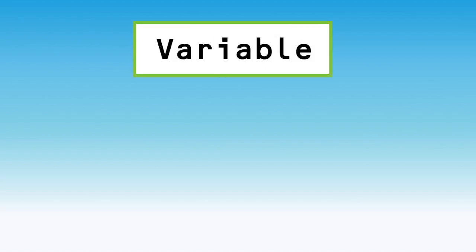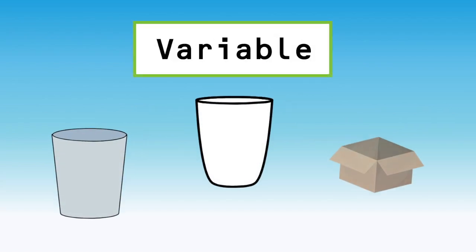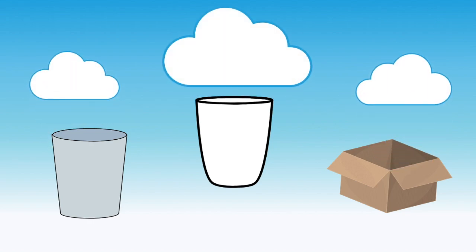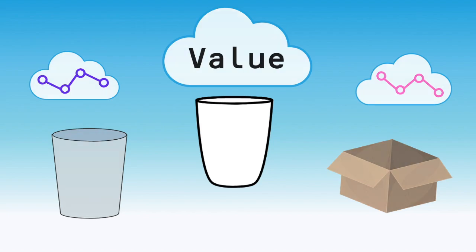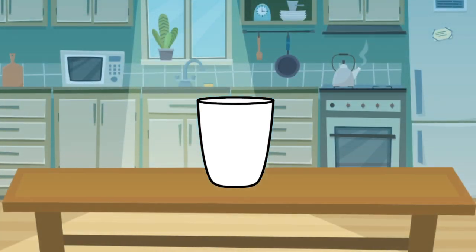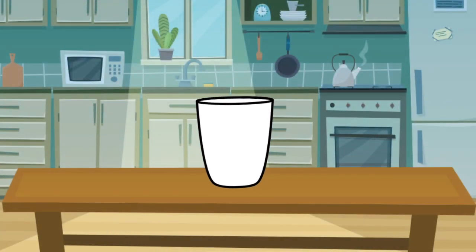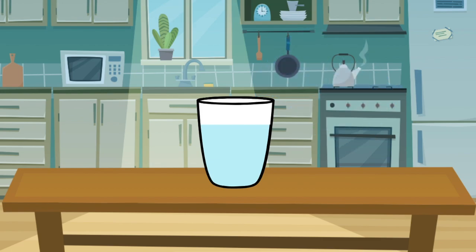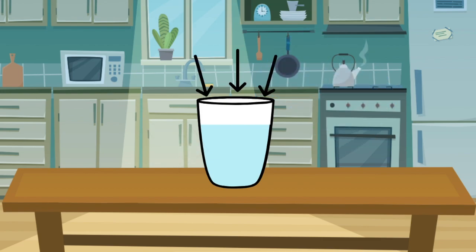So what exactly is a variable? You can think of a variable like a container that holds information. The information, or data, stored in a variable is called the value. Let's say you are thirsty, so you grab a cup from your cupboard. The cup is clear glass and you can see that it is empty. You fill the cup up with water. Now the cup looks like it has changed — the color is blue. However, the cup itself is not different at all.